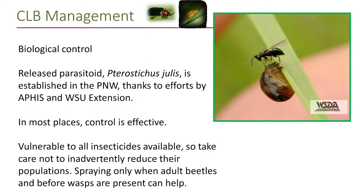Cereal leaf beetle is also affected by biological control. A parasitoid, Tetrastichus julis, has been released in the Northwest thanks to efforts by APHIS and WSU Extension. In most places, this parasitoid achieves relatively high levels of parasitism, and the effects of cereal leaf beetle are noticed only in some parts of the region — presumably because this parasitoid is working where it is present. To protect it, avoid spraying when the larvae are present, because that's when the parasitoid is present. When the adults are laying eggs, the parasitoid is not yet in the system — it comes out later to attack those larvae.